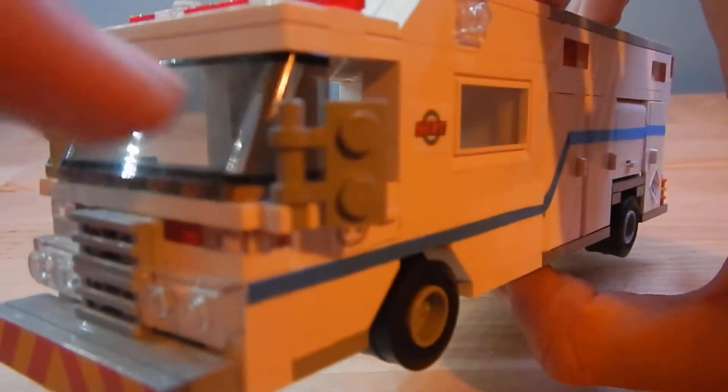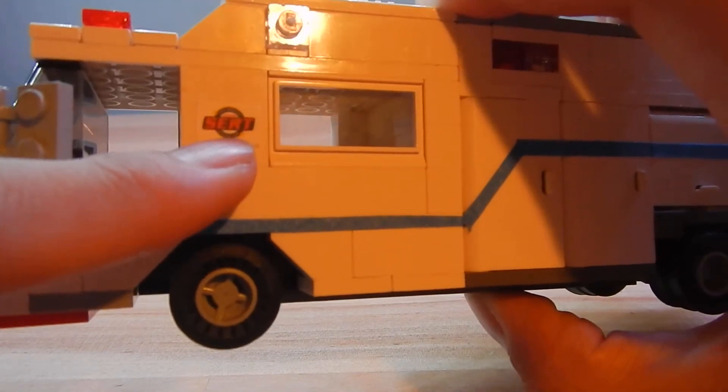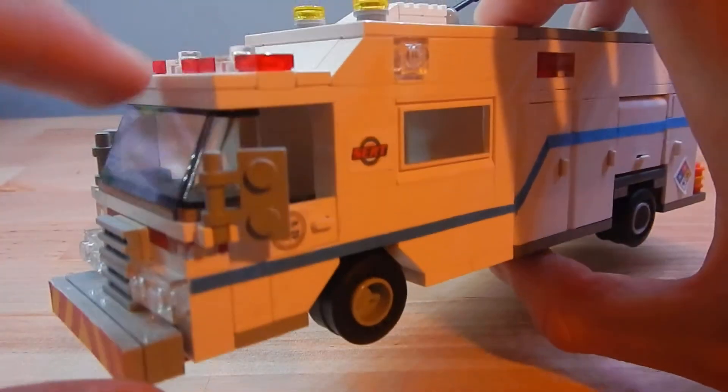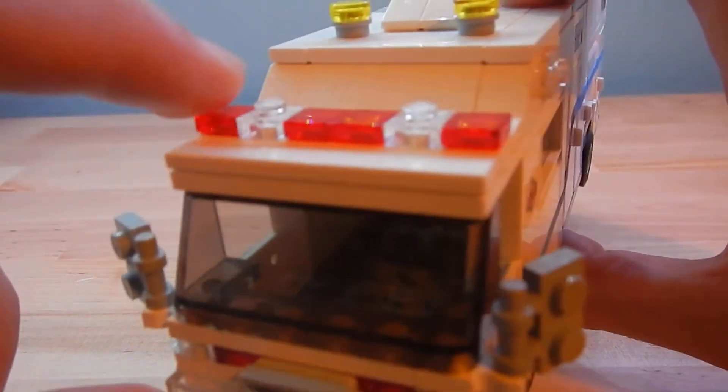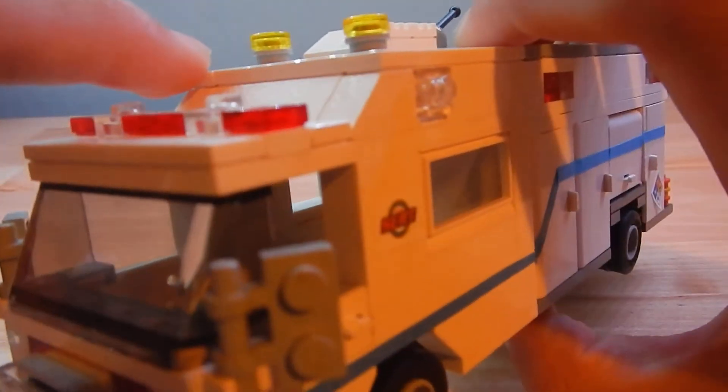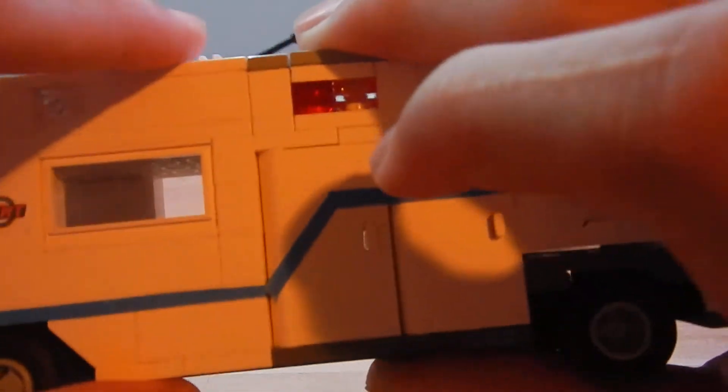You got the mirrors here, the department logo, the Florida State Emergency Response Team logo because I do live in Florida and this is a Florida department. You got the light bar up here, two warning lights for when this responds to the airport, a scene light there, the command cab window.